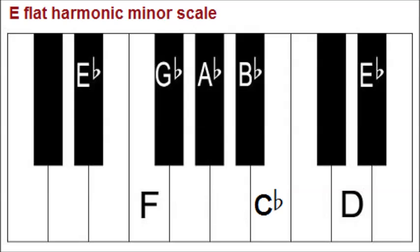The notes of the E-flat harmonic minor scale are E-flat, F, G-flat, A-flat, B-flat, C-flat, and D. Notes 1, 4, and 5 are E-flat, A-flat, and B-flat.